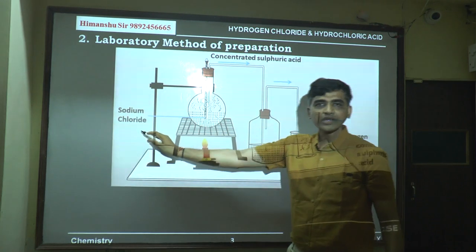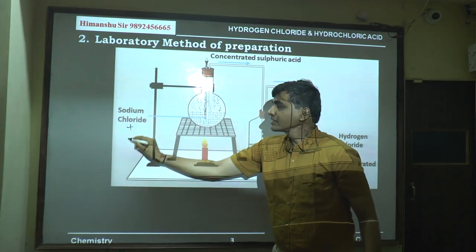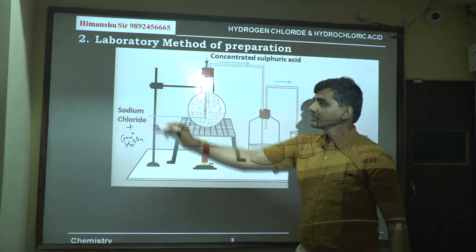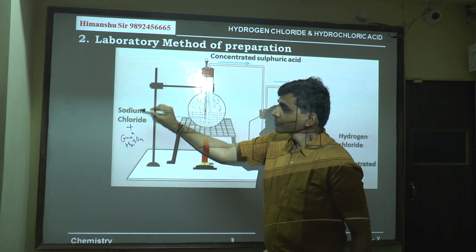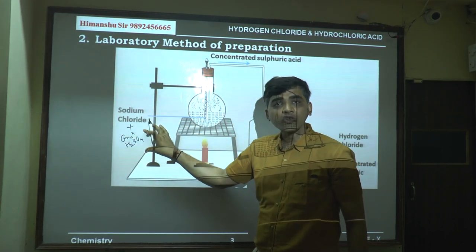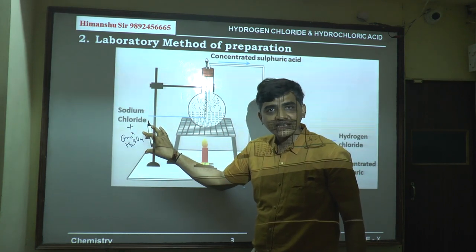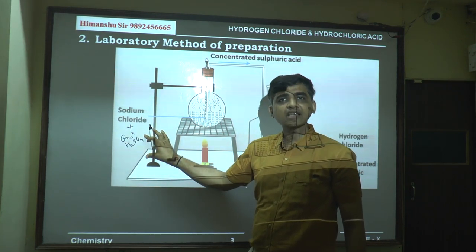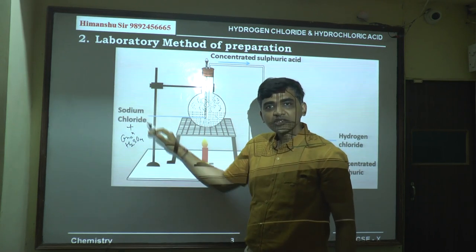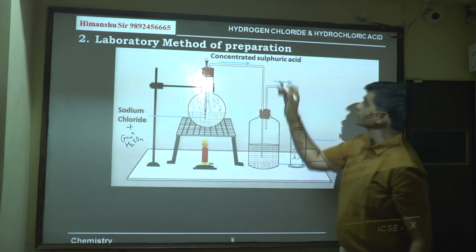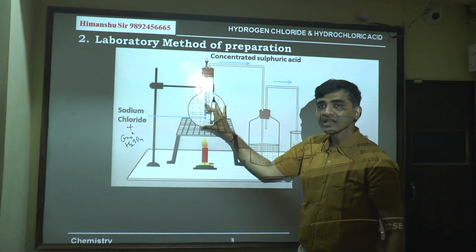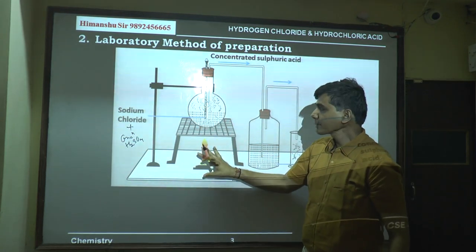The reactants are sodium chloride plus concentrated sulfuric acid. Sodium chloride is selected because it is cheap and easily available. Concentrated sulfuric acid is selected because it is non-volatile and has a high boiling point. These two reactants are mixed in a round-bottom flask with heat energy supplied.